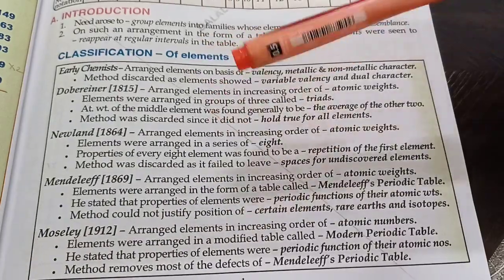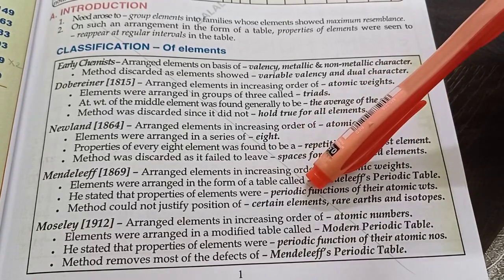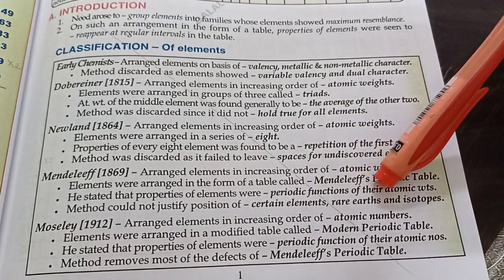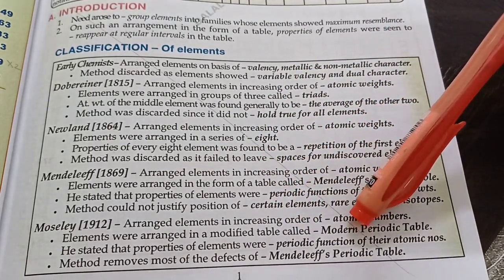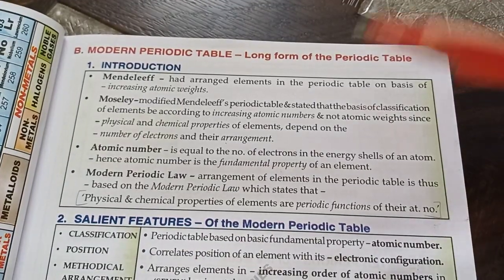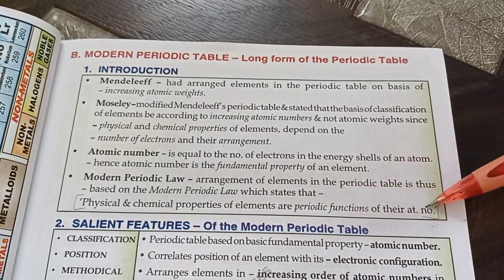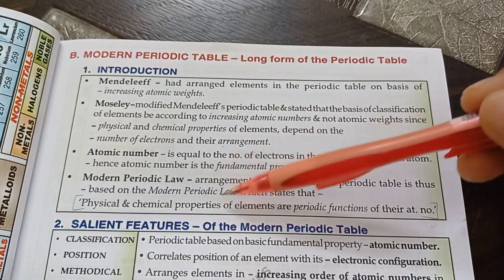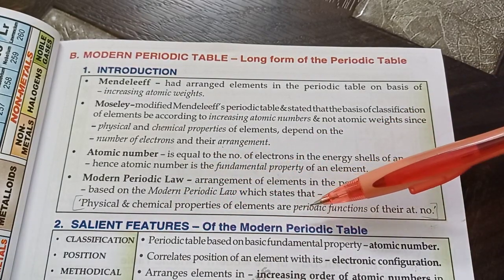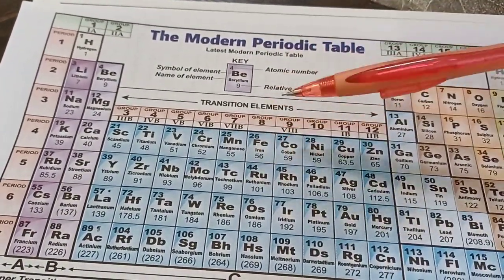It started with Dobereiner's triads which failed, then Newlands' octaves, and then Mendeleev's periodic table — he was the father of the periodic table. But he used atomic weights, not atomic numbers, due to which there were some defects. Then Moseley suggested using atomic numbers, which laid the foundation of the modern table. The periodic law was modified: physical and chemical properties of elements are periodic functions of their atomic number. If we arrange the elements as per their atomic numbers, we will see a repetition in their physical and chemical properties.